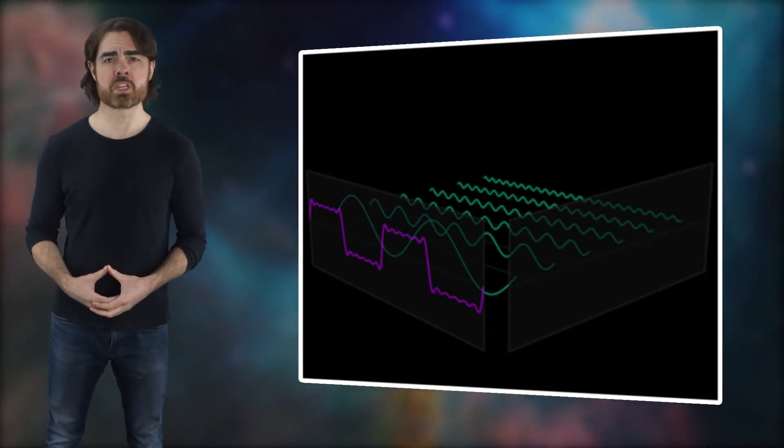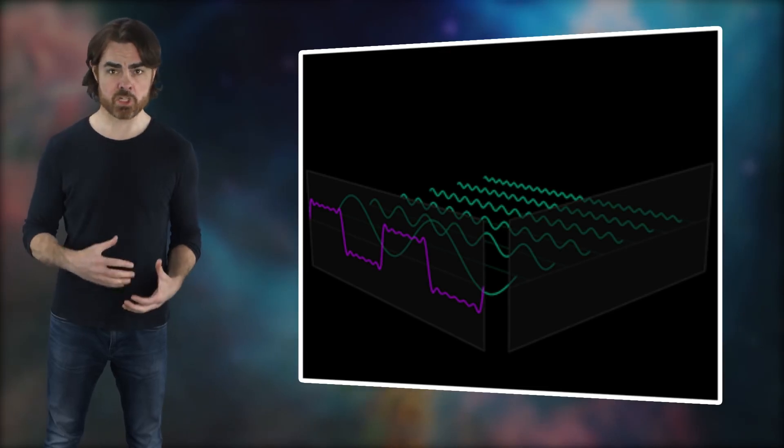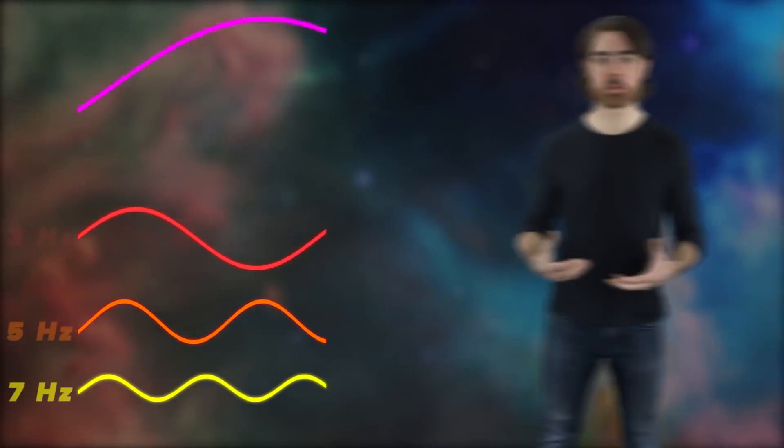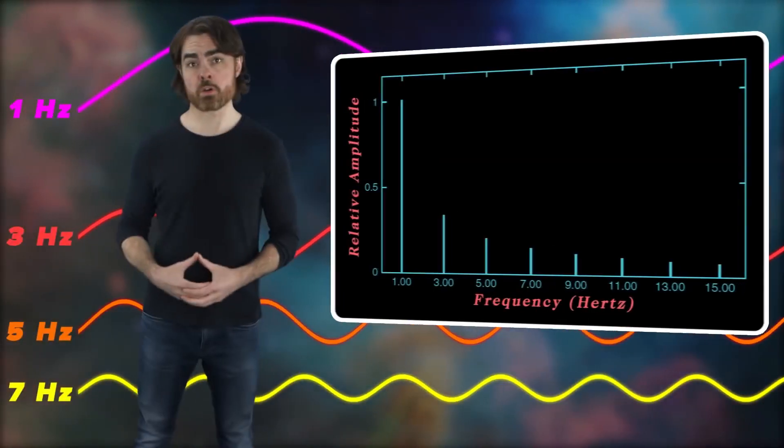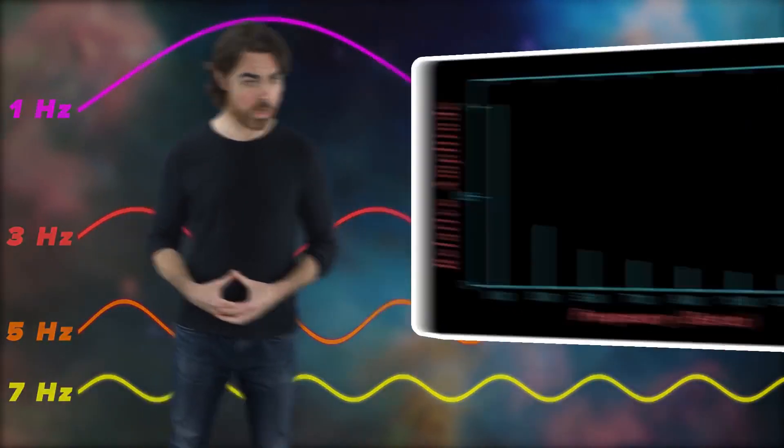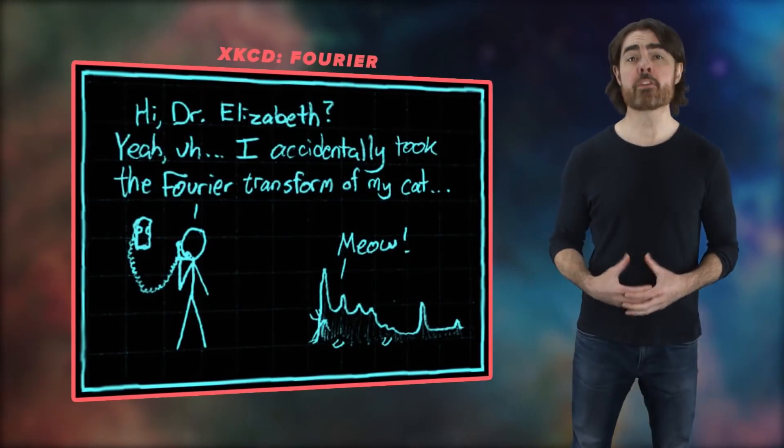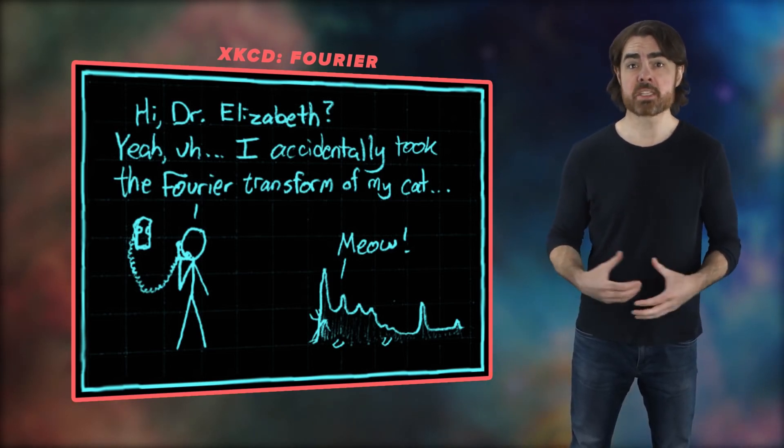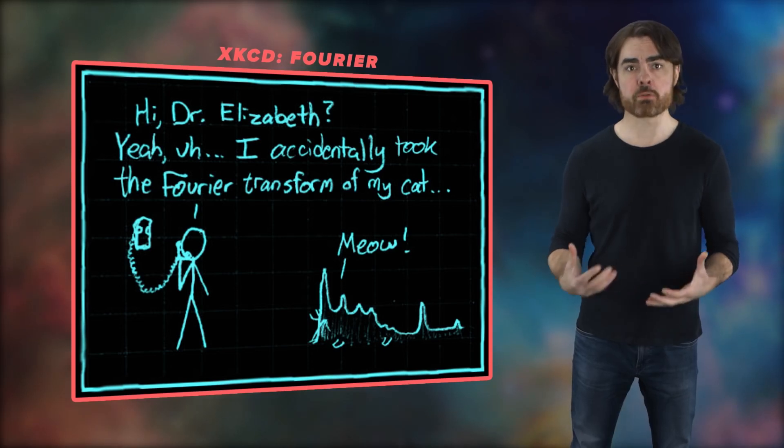In fact, instead of representing a sound wave in terms of intensity changing with time, you can also represent it in terms of its frequency components, each with its own weighting or strength. When you switch between a time and a frequency representation, you're doing a Fourier transform. In fact, digital audio equipment stores, manipulates, and transmits sound in its frequency representation.